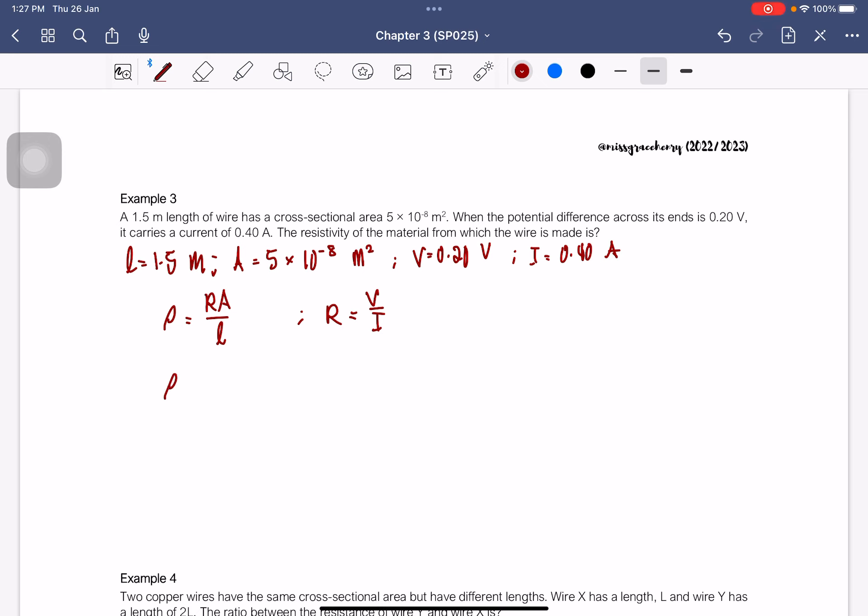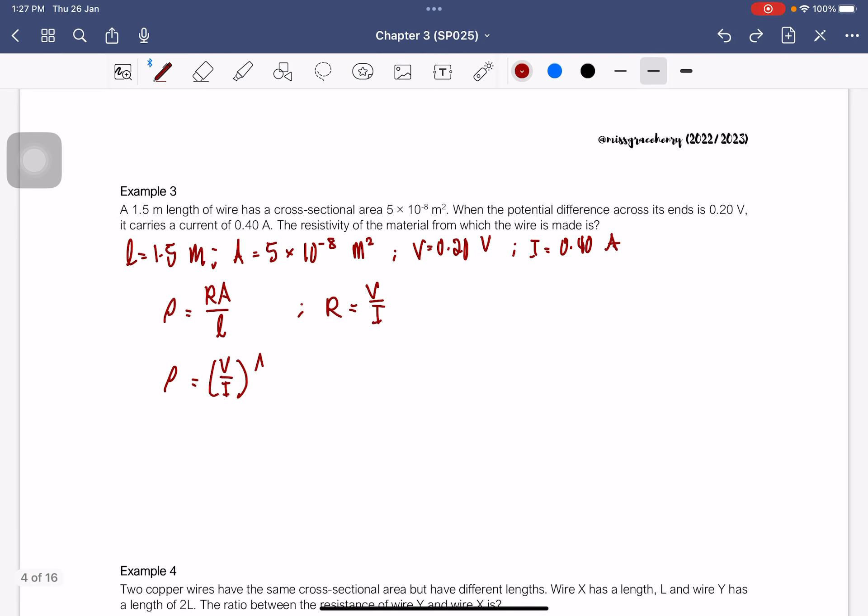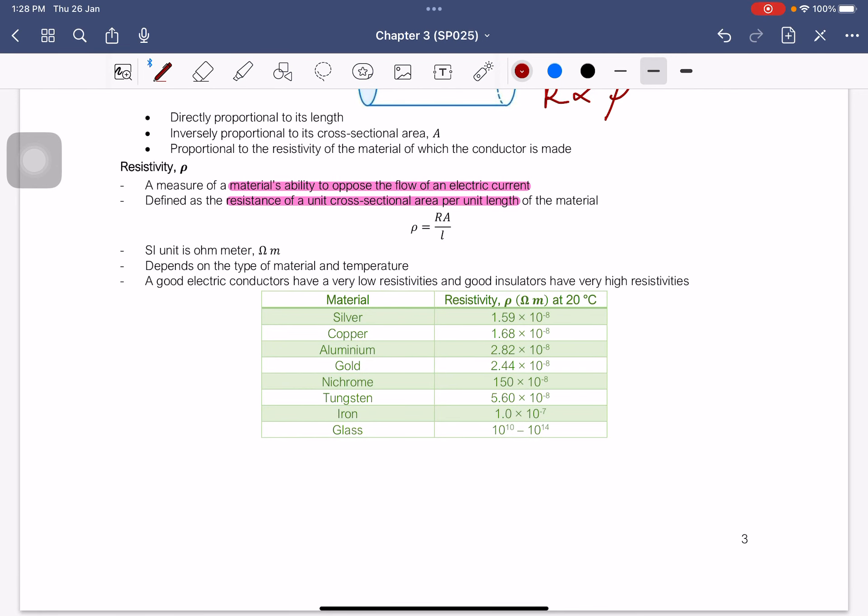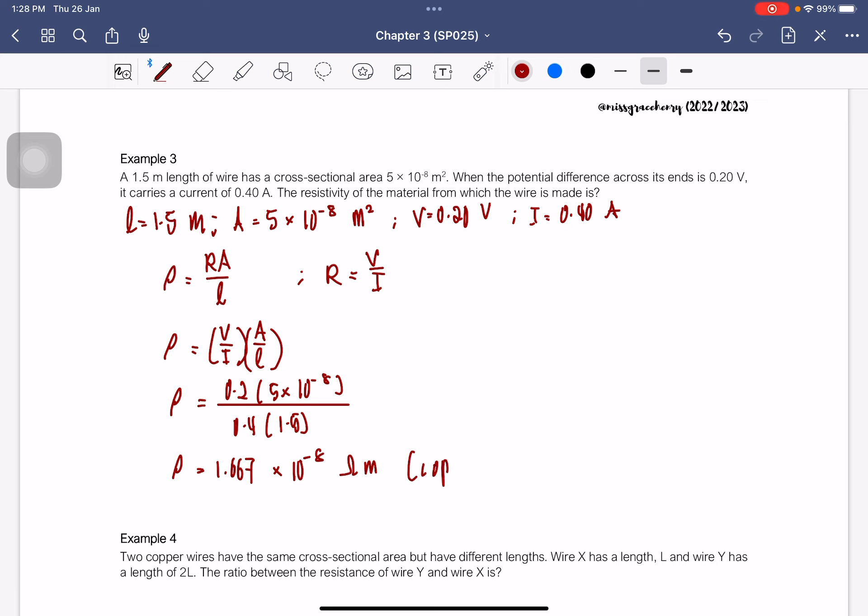We get this, A over L. So we can substitute, 0.2, this is 5 times 10 to the negative 8, over 0.4, 1.5. So the resistivity is equal to 1.667 times 10 to the power of negative 8 ohm meter. So it is made of copper. The material is copper. Usually they just ask for the number, but you will be given the table. They are made of copper. But this is basically the value of resistivity for copper.